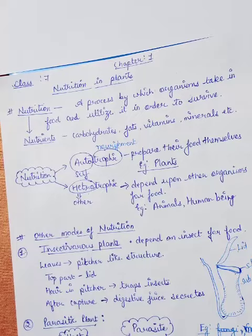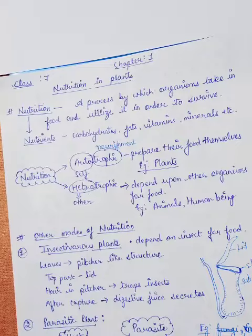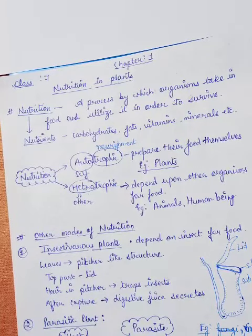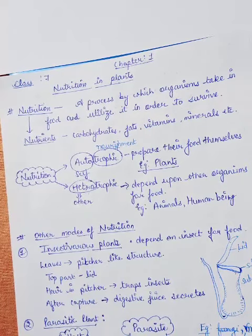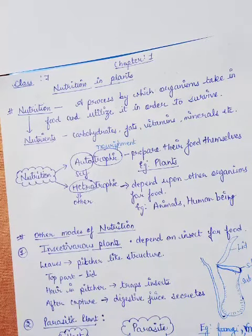Nutrition is of two types: autotrophic and heterotrophic. 'Auto' means self and 'trophic' means nourishment. So, plants or organisms that prepare their own food are called autotrophs, and their mode of nutrition is called autotrophic mode of nutrition. An example is plants.